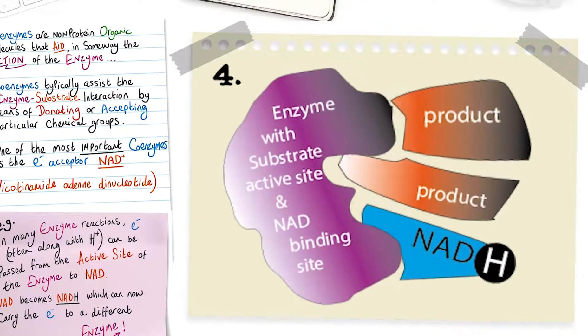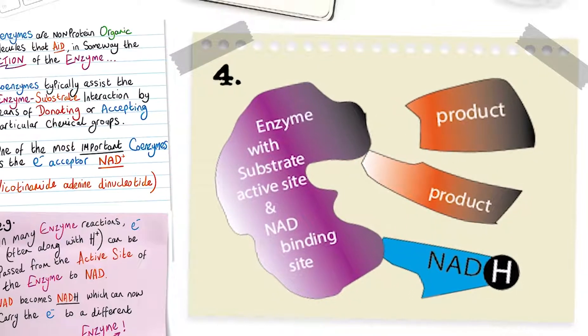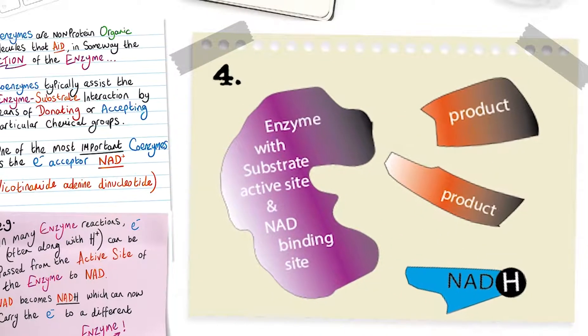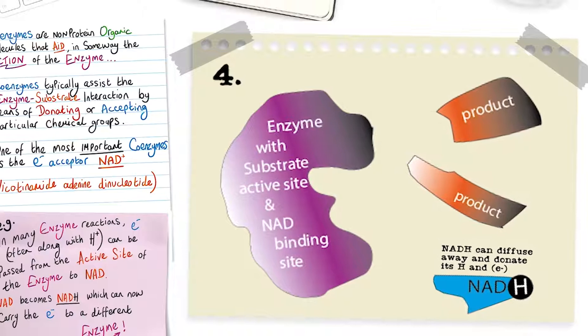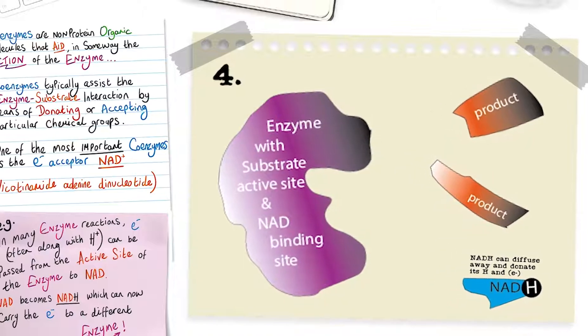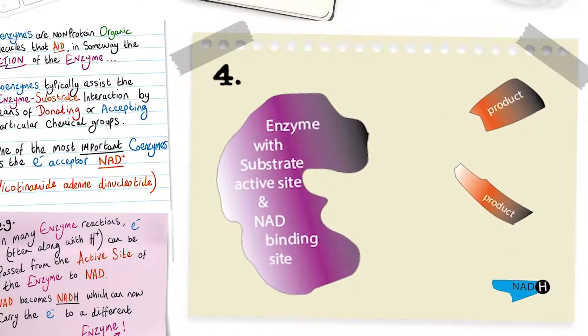In step four, the products are released along with NADH, which now can diffuse away and is able to donate the hydrogen, along with its electrons, to a different enzyme or other molecules.